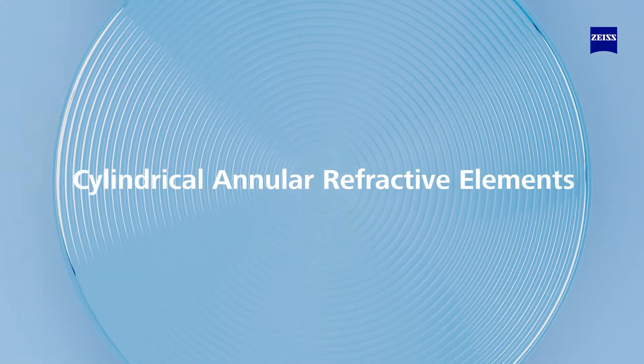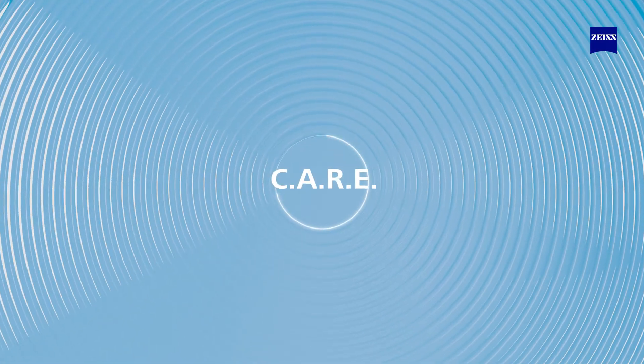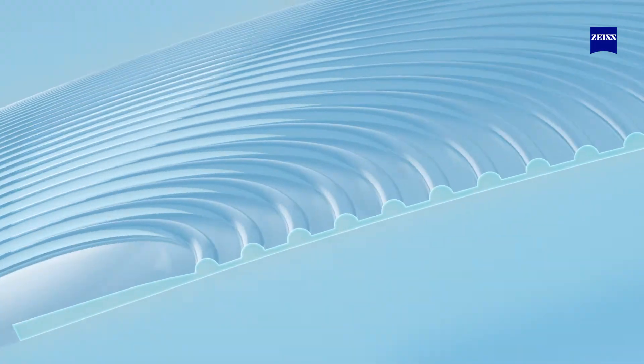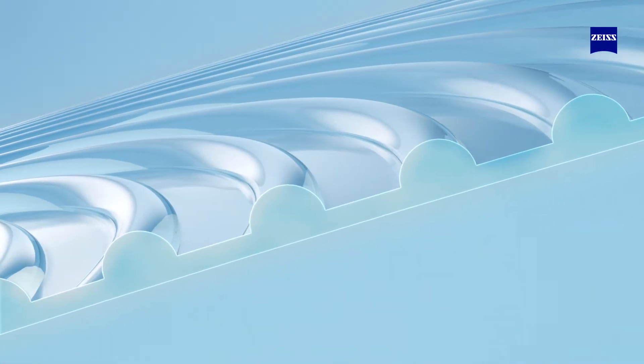It incorporates a central clear zone enabling clear and sharp vision for a straight-ahead line of sight, and a peripheral functional zone formed with annular cylinders that are equally distributed on the lens with precise width, height, and spacing.